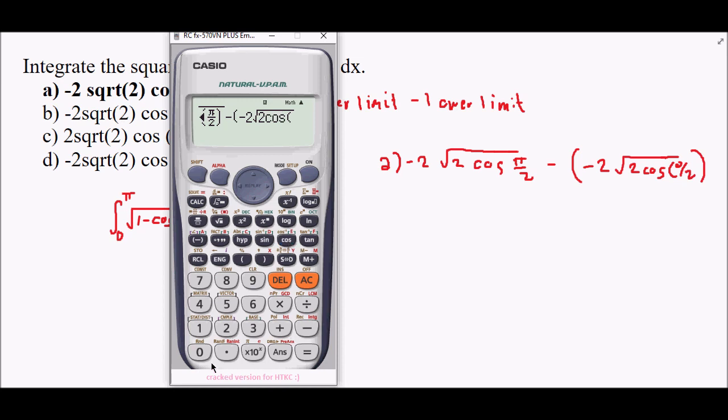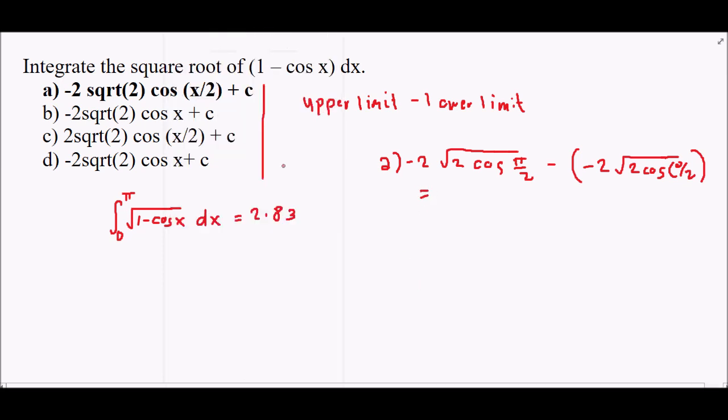Cosine of 0/2 is just 0. We have 2.83, which matches letter A. For verification, we will also substitute the upper and lower limits into our choice. We have -2√2 cos(π/2) minus -2√2 cos(0).